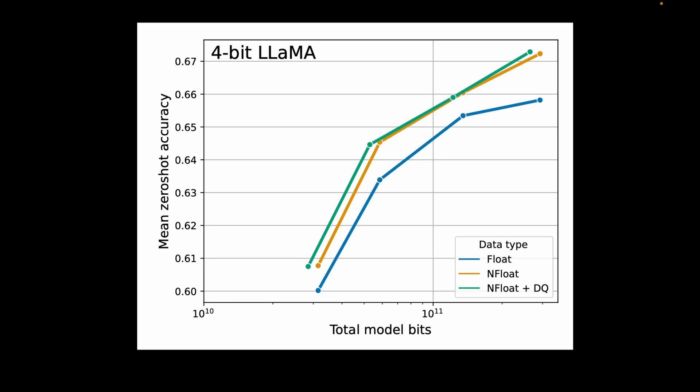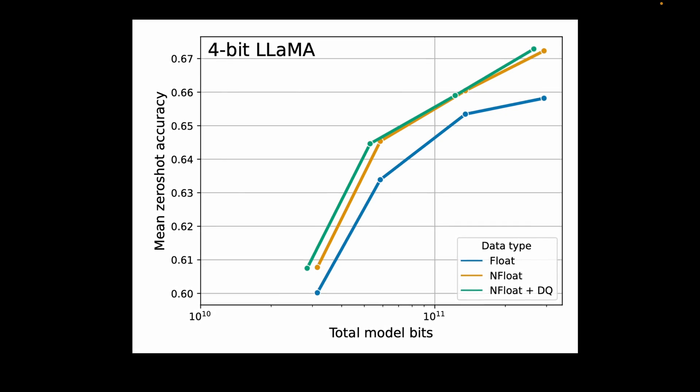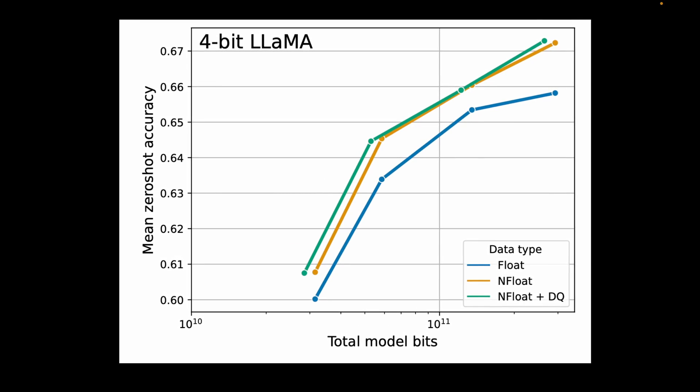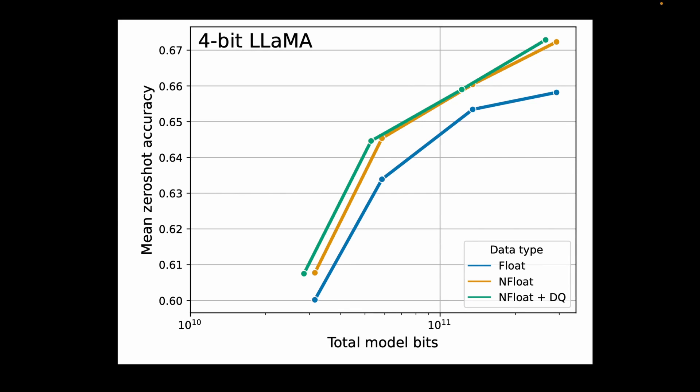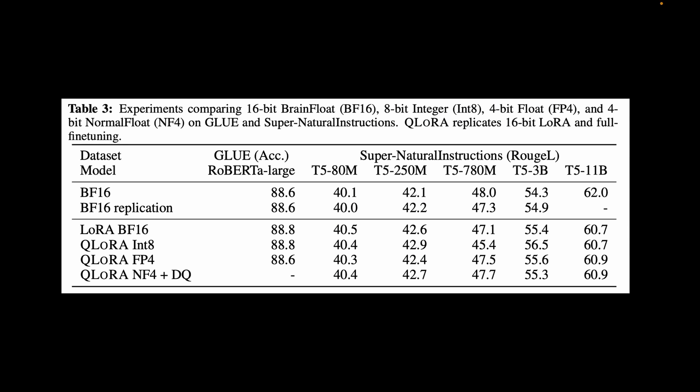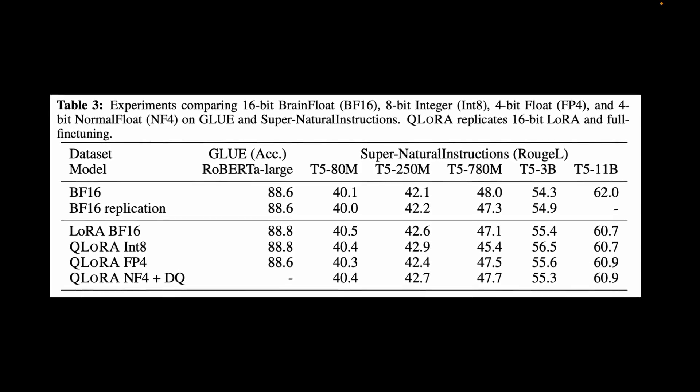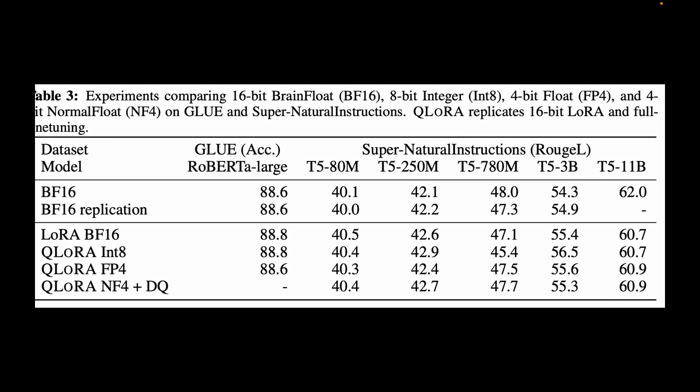If you're wondering how good is all this normal float stuff and double quantization, the authors of QLoRa experimented with 4 datasets and show that in all four cases, using normal float and double quantization improves the mean zero-shot accuracy of training compared to simply using float. In terms of the glue score, QLoRa is able to replicate the accuracy of 16-bit LoRa and full fine-tuning. The authors concluded that 4-bit QLoRa with normal float data type matches 16-bit full fine-tuning and 16-bit LoRa fine-tuning performance on academic benchmarks with well-established evaluation setups.